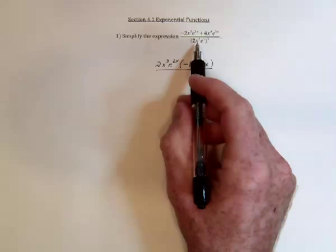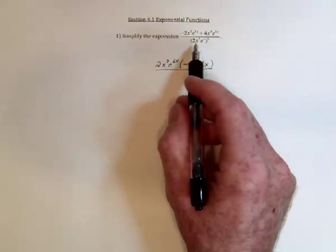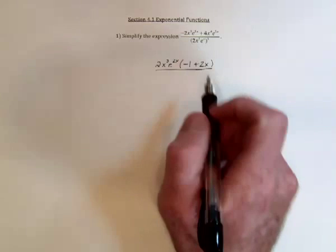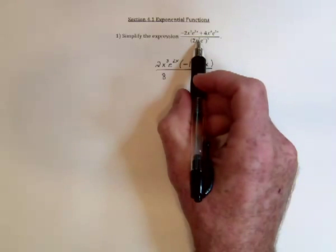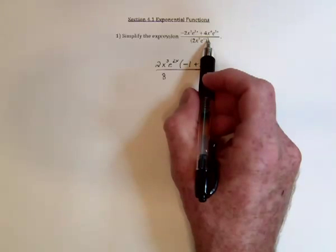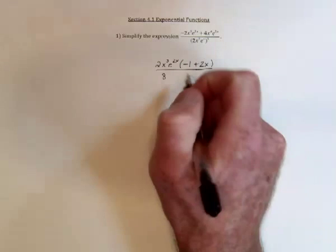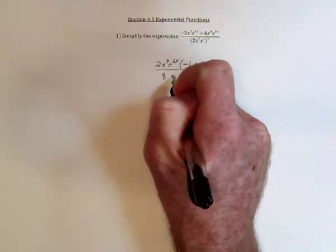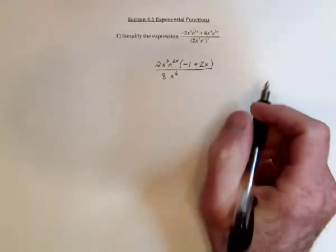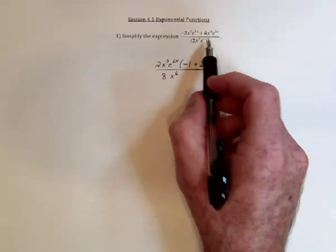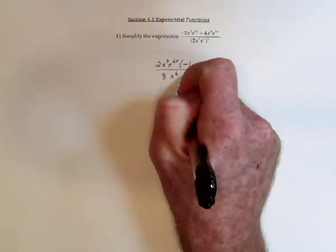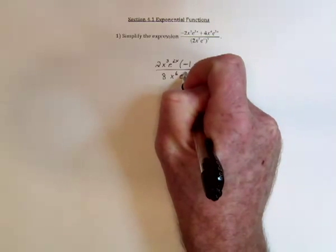For the denominator everything needs to be cubed. So this is going to be a 2 cubed, which is an 8. Then there's an x squared which gets cubed. When a power is raised to a power you multiply, so that's going to be x to the 6th. And the same type of thing here. e to the x is then cubed. So multiply the exponents. It's going to be e to the 3x.